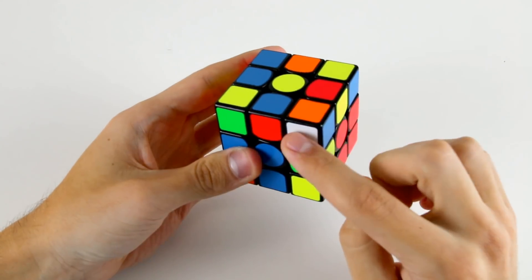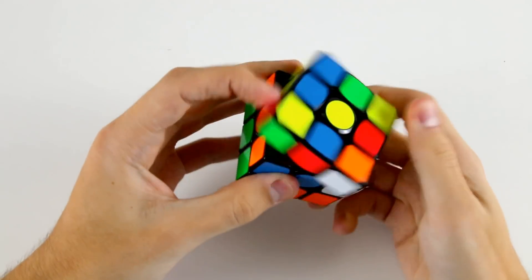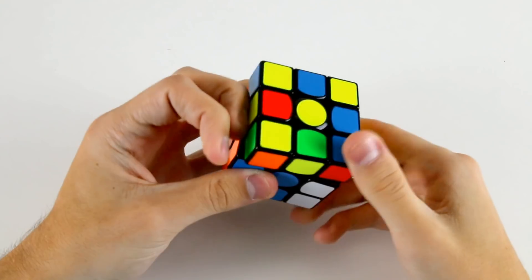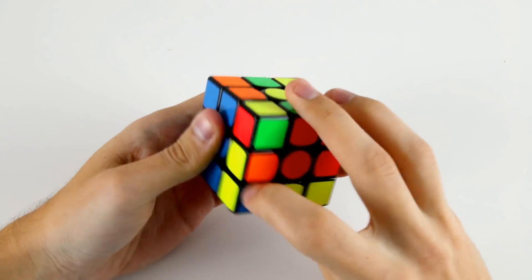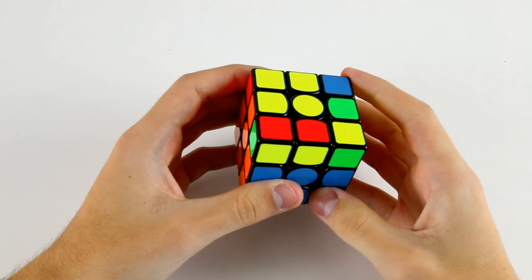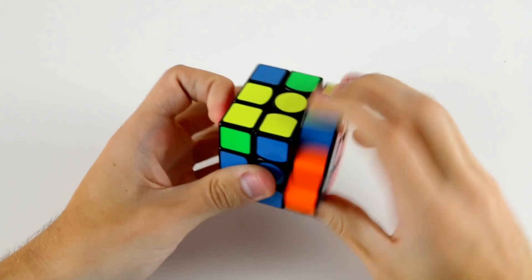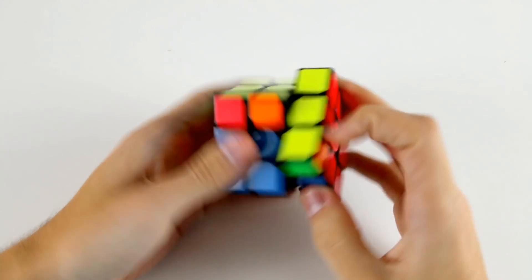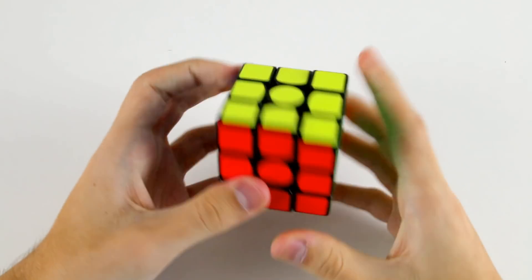Then I can do keyhole and insert this corner like that and then do these two and I would probably do a sledgehammer to orient two edges, OLL and then G permutation for PLL.